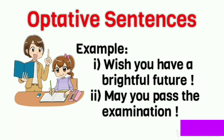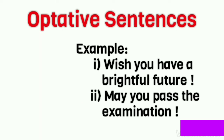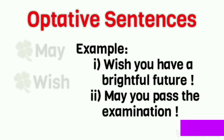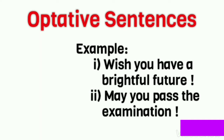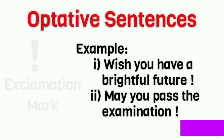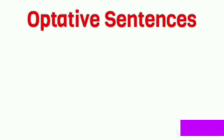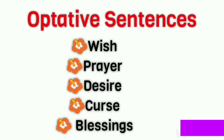For example, a teacher wishes her student: 'Wish you have a bright future.' Another example: 'May you pass the examination.' Notice the given examples. Optative sentences begin with words like may or wish, and you can find an exclamation mark at the end of any optative sentence. Thus, optative sentences express our wish, prayer, desire, curse, etc.